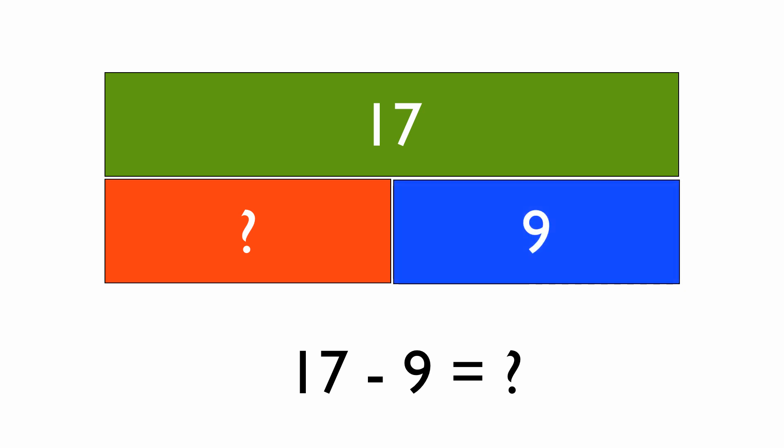By doing that sum, 17 take 9, we come up with the answer which is 8. Again, it's fairly easy with small numbers but this strategy works exactly the same no matter how big the number is.